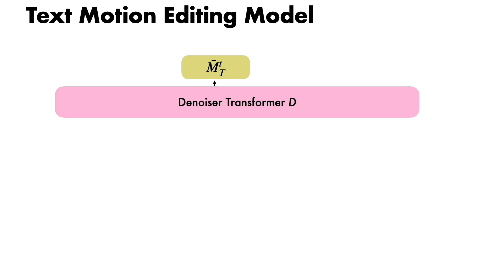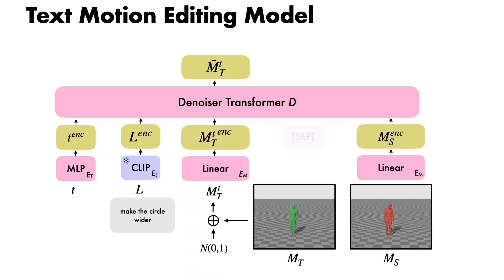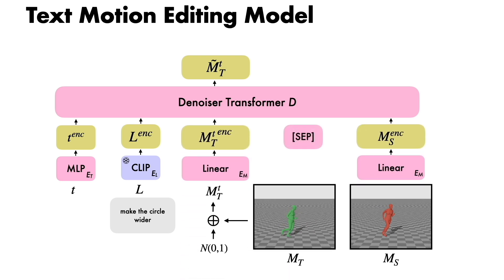We introduce a conditional diffusion model to solve the task of 3D human motion editing from text. Our model is based on MDM and takes as input the diffusion timestep T, the edit text which is encoded by CLIP, and the source and noise target motions which are separated with a separation token.